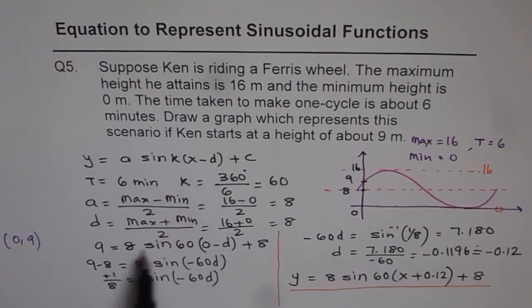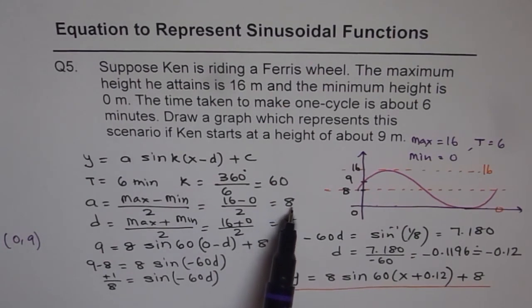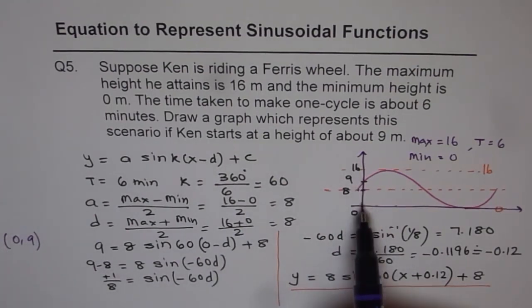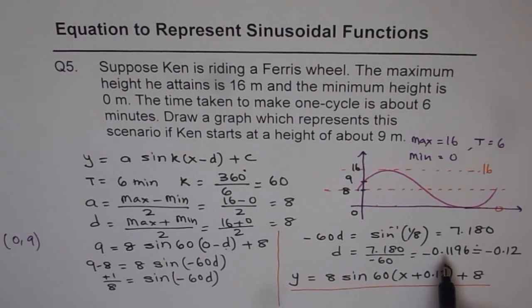So first you can write down your equation as y equals 2 from these values. 8 sin 60 of x minus d plus 8. And then to find the value of d, you can use the given point, which was the y intercept 0 and 9. Once you find d, you know your equation. Now that is how the question should be solved.